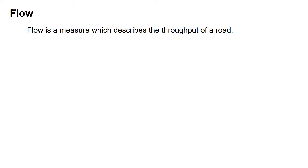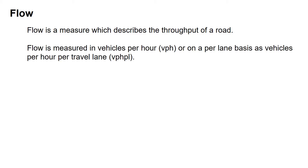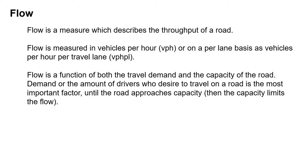Flow is a measure that describes the throughput of a road. Think of yourself as standing beside a road and measuring the vehicles passing by you — this is a measure of flow. It's measured in vehicles per hour, or on a per-lane basis as vehicles per hour per travel lane. It's a function of both the travel demand and the capacity of the road.